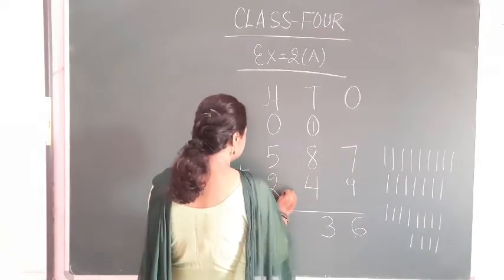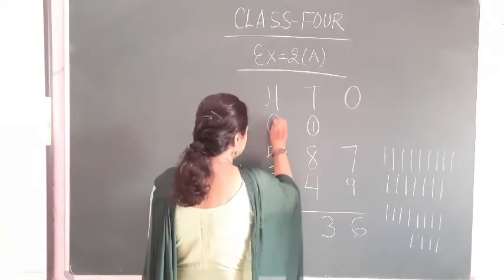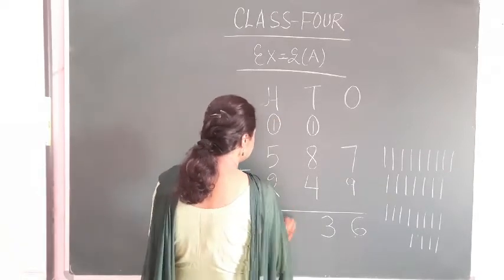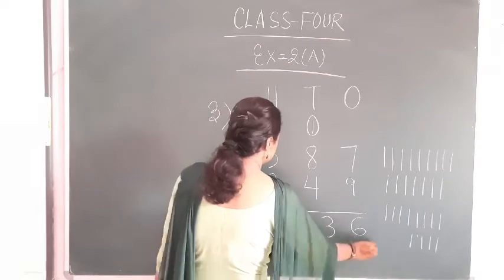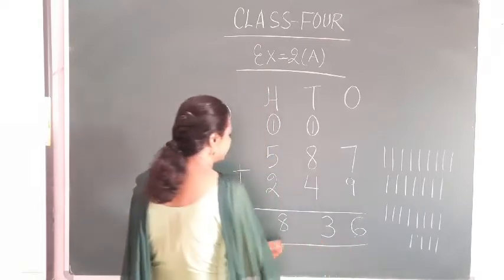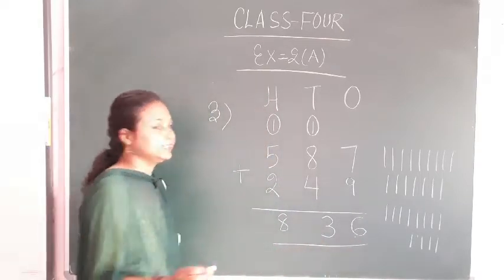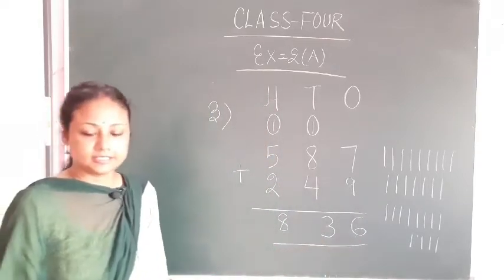5 plus 2 is 7. And this is 8. Then the number is 8, 3, 6.